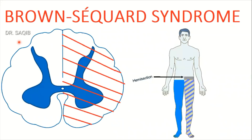Brown-Séquard Syndrome is also known as hemisection of the cord. There is a lesion on half of one side of the spinal cord. This is the cross-section of the spinal cord at the thoracic level, at T10. This side is paralyzed. The causes include a tumor or a fracture — this is a hemisection, Brown-Séquard Syndrome, and it will produce the symptoms we're going to discuss in the next slides.